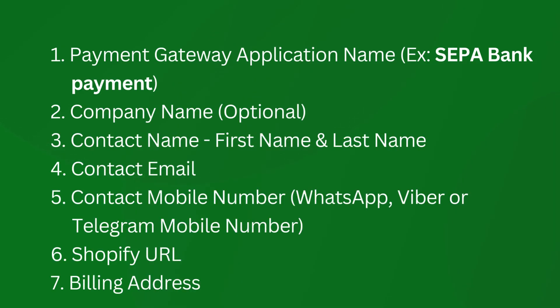Please send the following details via WhatsApp to complete the merchant onboarding process and obtain a live mode license: 1) payment gateway application name (e.g., SEPA bank payment), 2) company name (optional), 3) contact name — first name and last name, 4) contact email, 5) contact mobile number (WhatsApp, Viber, or Telegram), 6) Shopify URL, 7) billing address.